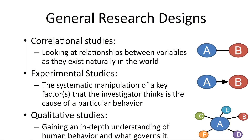Once you've chosen a method, the next step is to choose a general research design. There are three basic ways you could go in human development research. Correlational research is quite popular — that's where you look at relationships between variables as they exist naturally in the world, asking whether one variable is related to another.